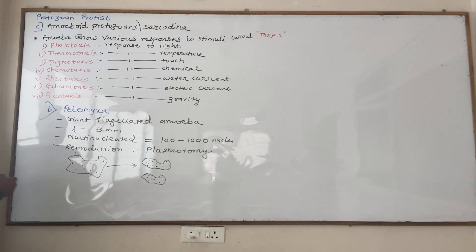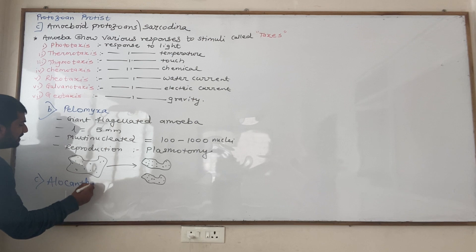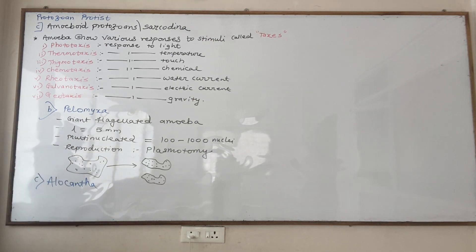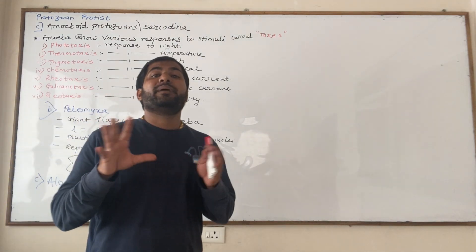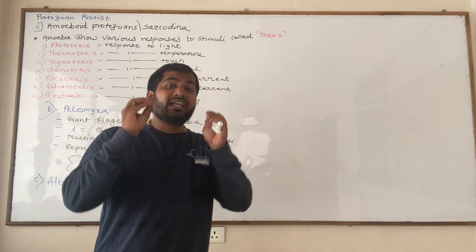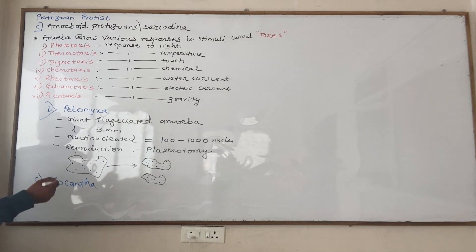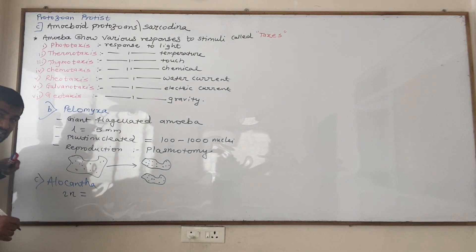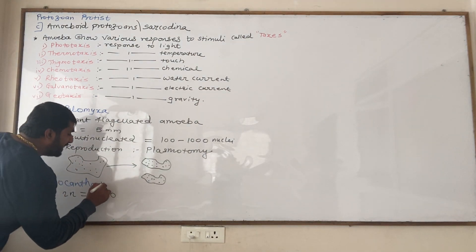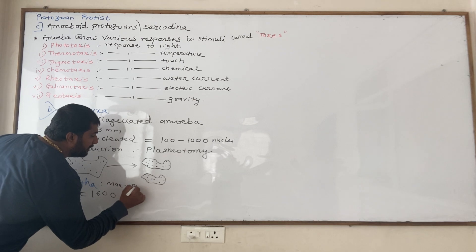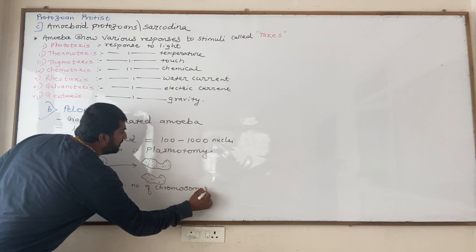The next example is Aulacantha. Aulacantha is the organism which has the maximum number of chromosomes in kingdom Animalia. In human beings, 2n equals 46, but in Aulacantha, 2n equals 1600. So the maximum number of chromosomes in the animal kingdom are present in Aulacantha.